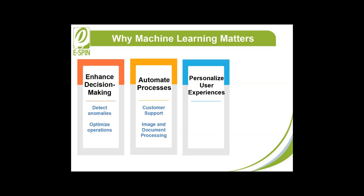Personalize user experiences: machine learning enhances user engagement by tailoring services to individual preferences. It powers recommendation systems — platforms like Netflix and Spotify use machine learning algorithms to suggest movies, songs, or shows based on user behavior and preferences — and targeted advertising, ensuring that advertisements align with a user's interests, making marketing campaigns more effective.